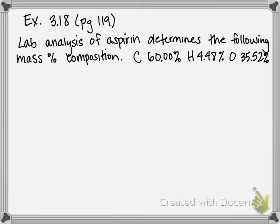This is example 3.18 on page 119 of our textbook, and this is another example of obtaining an empirical formula from experimental data. In this case, instead of being given gram amounts, we're given percentages. Lab analysis of aspirin determines the following mass percent composition.